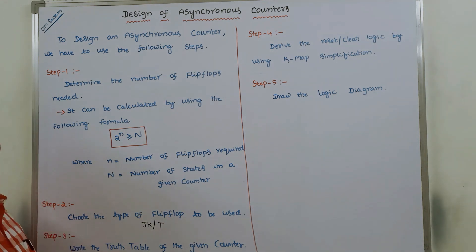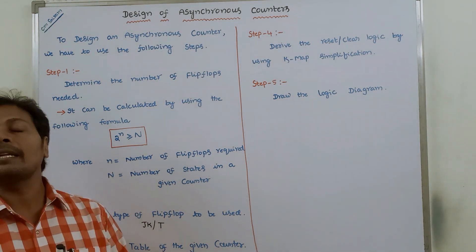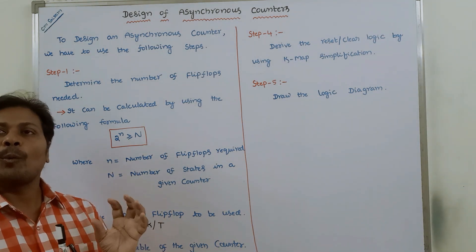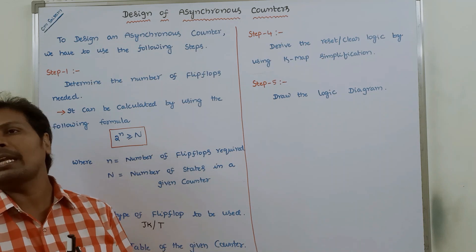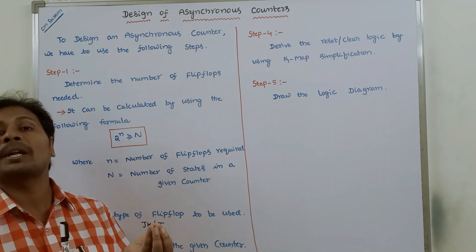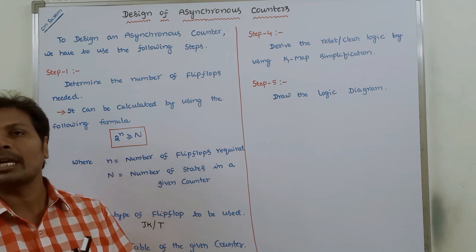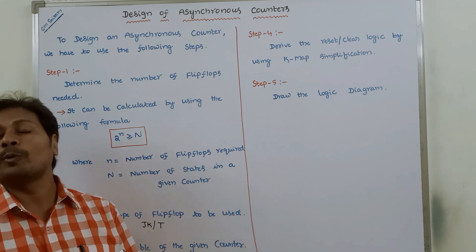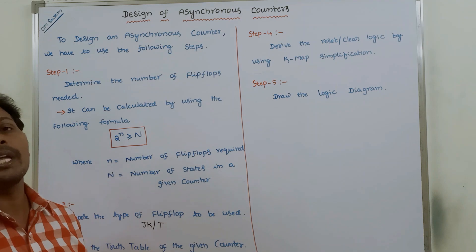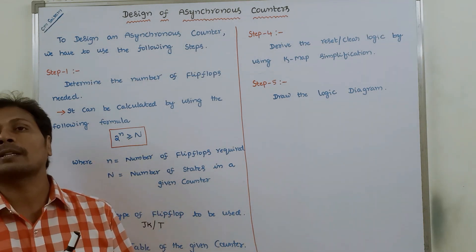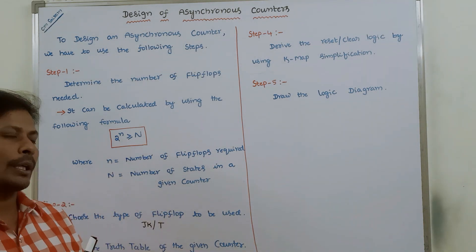Step 3: write the truth table of the given asynchronous counter. Once we have decided how many flip-flops are required, how many states are in the given counter, and which type of flip-flop to use, then we have to draw the truth table for the given asynchronous counter.